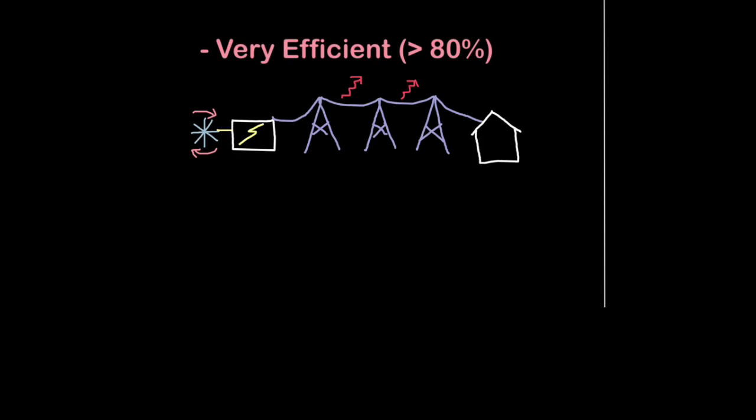Take for example something like how we get power from a power station. We have a moving turbine so there's potential for energy loss through friction there. As the electrical power travels through the cables, through the national grid, we lose energy as heat, it's wasted as heat.